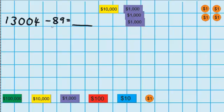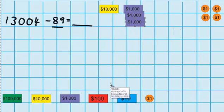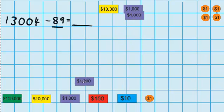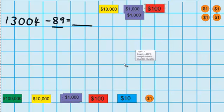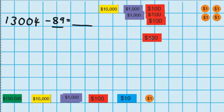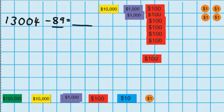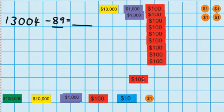Now you can see the question says I need to take away 89, but I don't have 89 here to take away. So what I'm going to have to do is break up one of these $1,000 notes. We know that $1,000 is the same as 10 $100 notes, so I'm going to swap one of these for 10 $100 notes — 1 through 10.